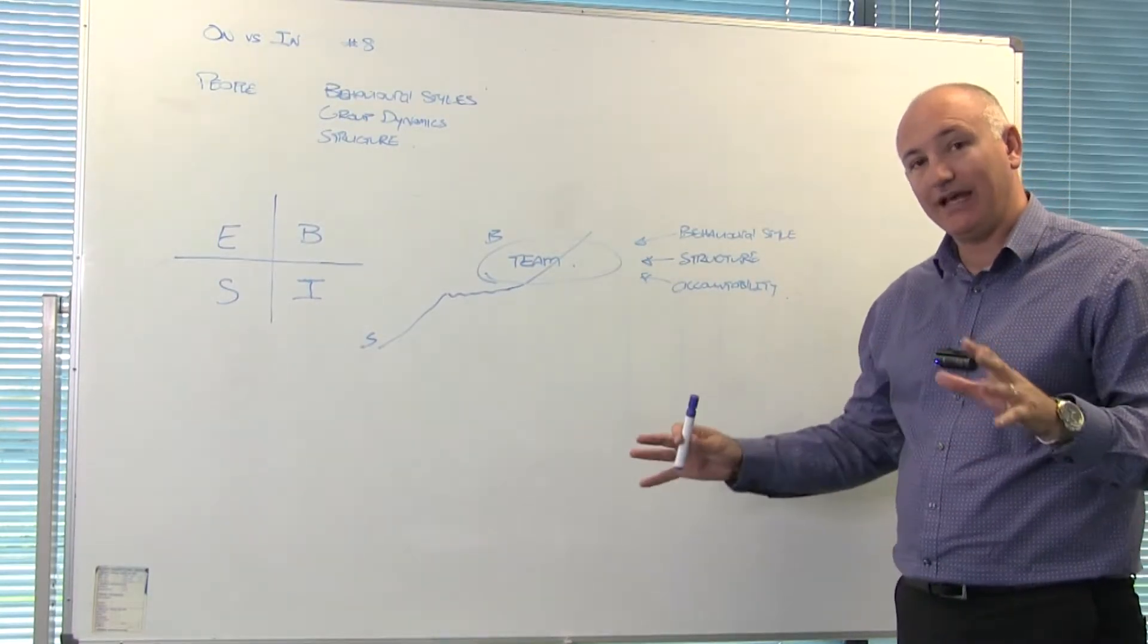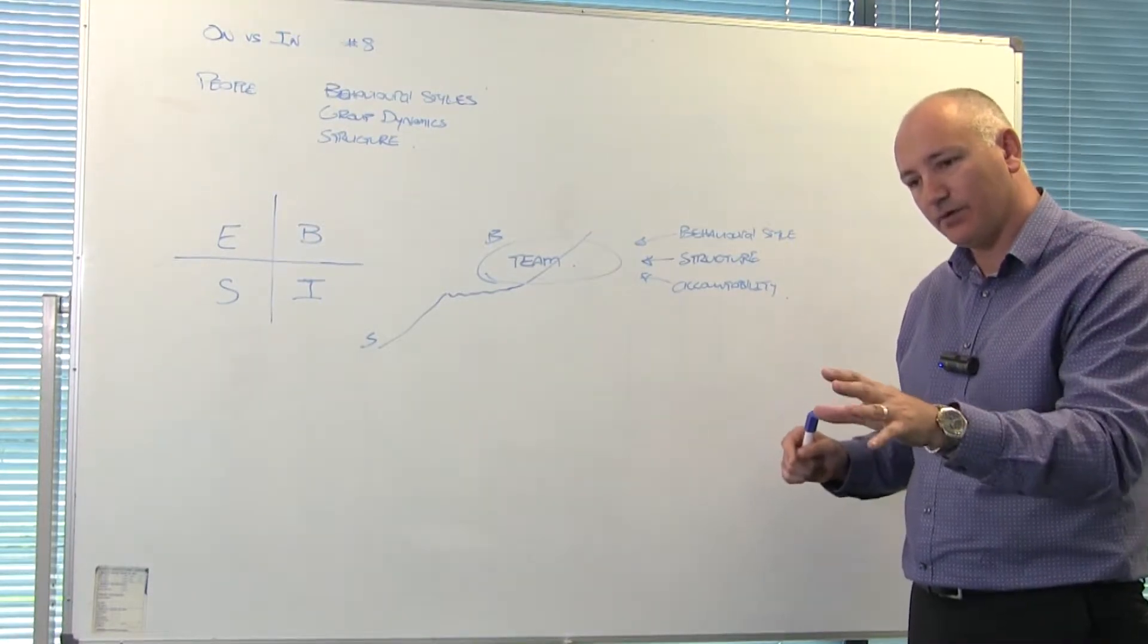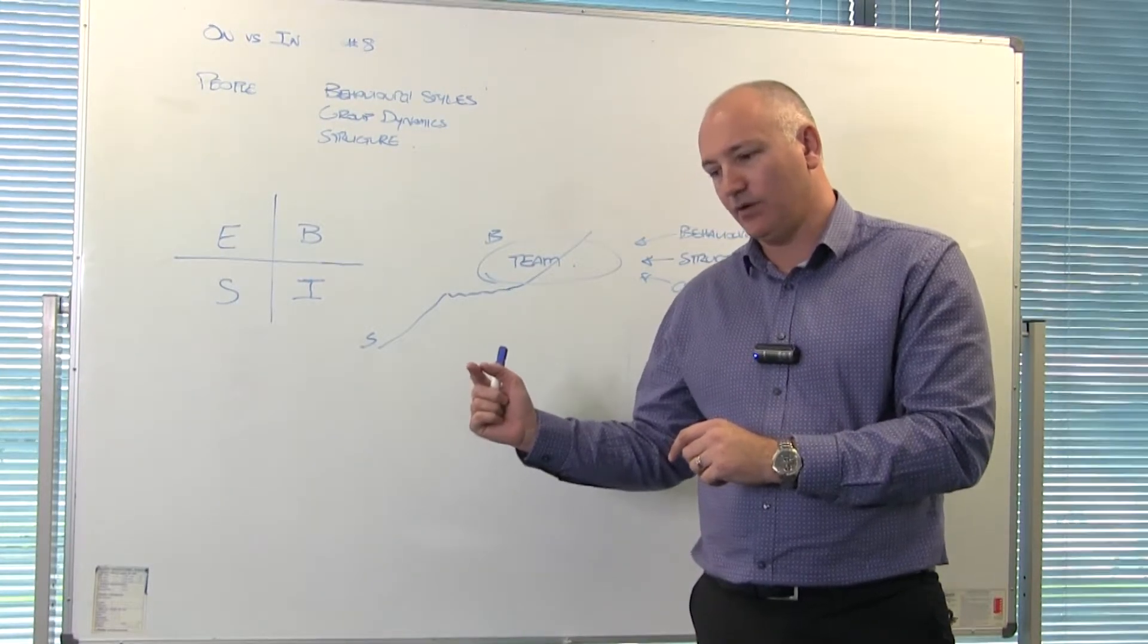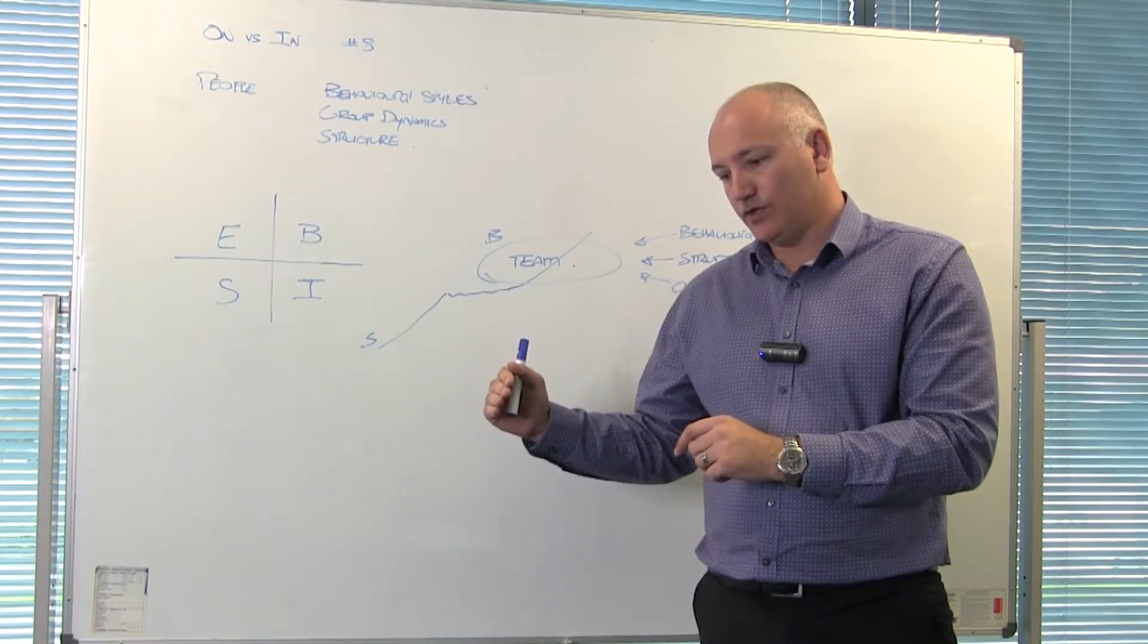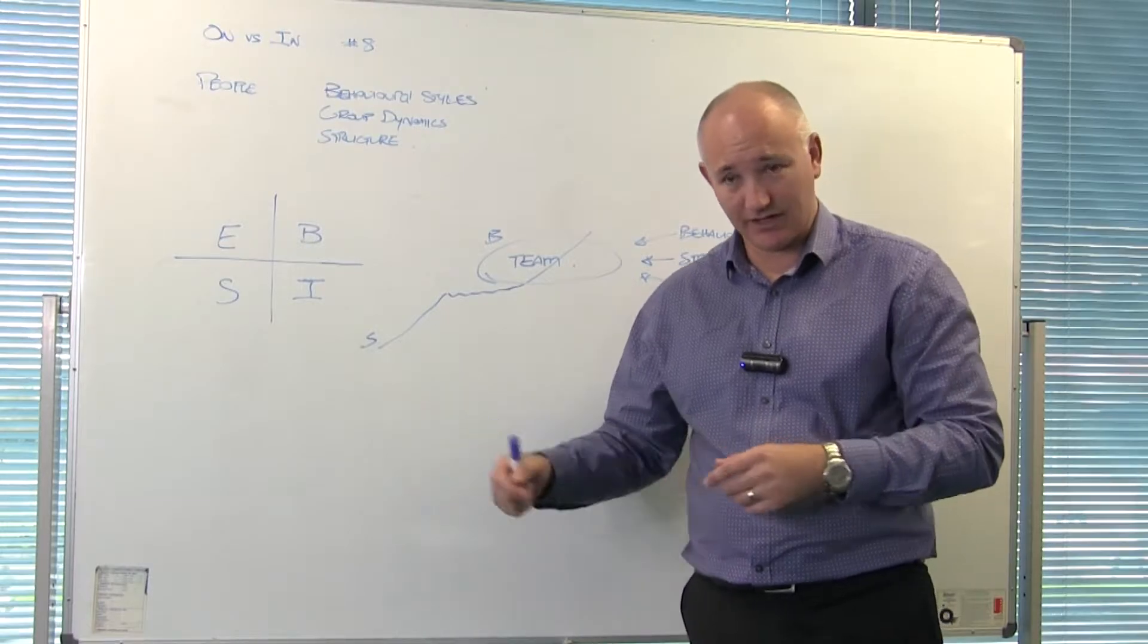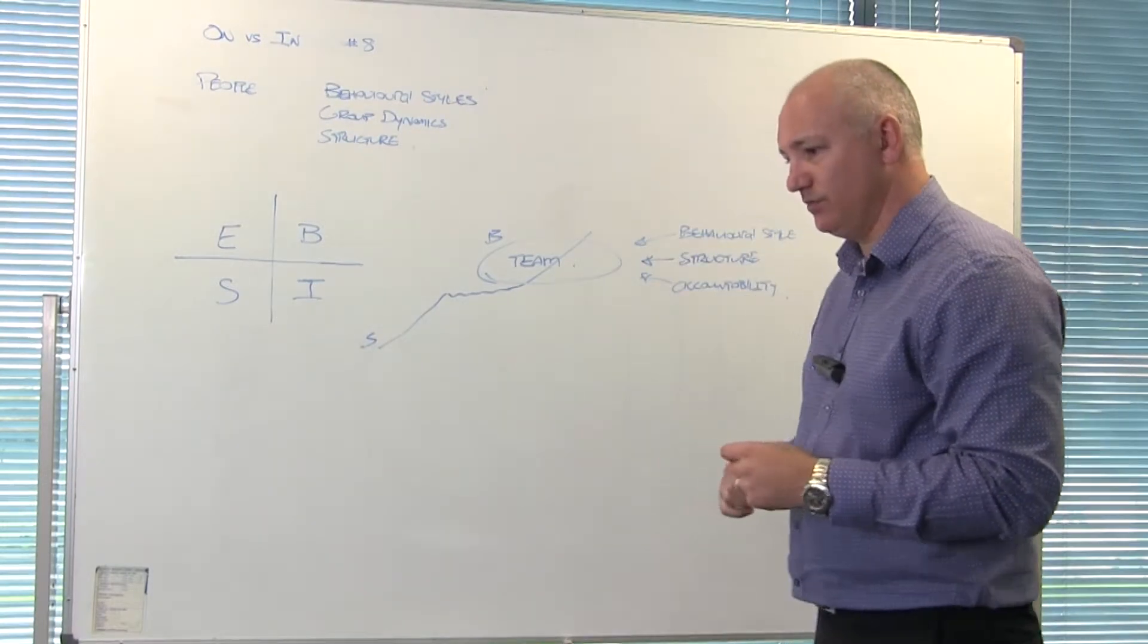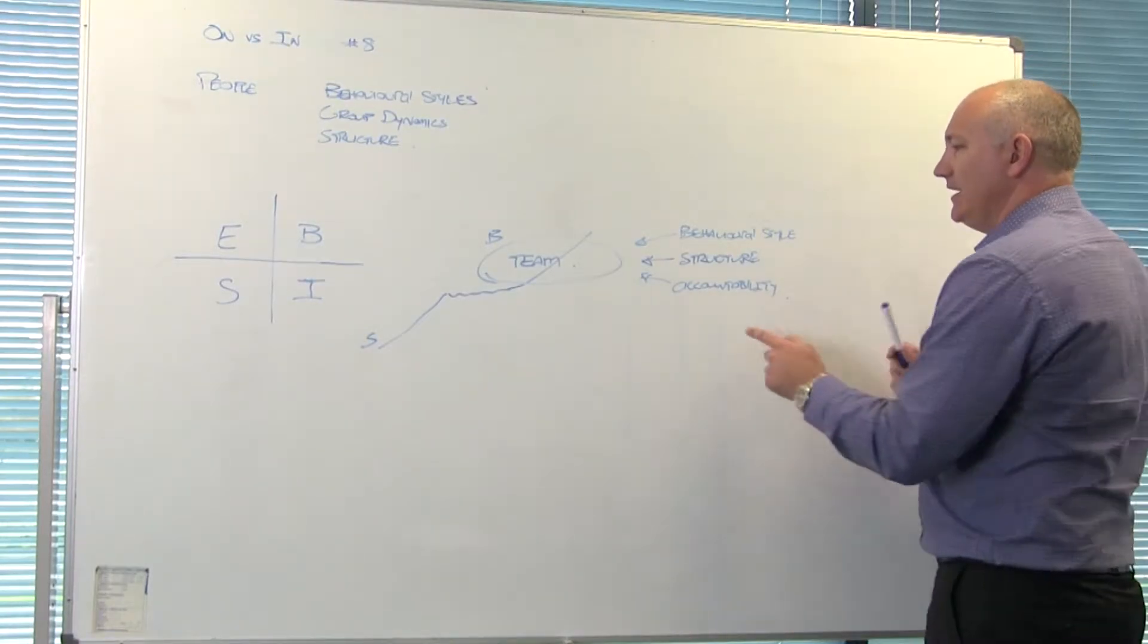So this is where the structure comes into play. One of those structures is a strategic plan that everybody buys into, or an operational plan that everybody buys into, or leading KPIs that everybody buys into. Their particular KPI might be actual versus quoted in terms of time taken for productivity. Or it could be conversion rates or it could be number of calls if you're going to go back to a traditional business model in sales. And accountability.